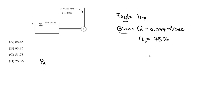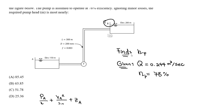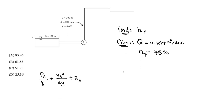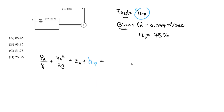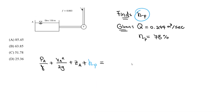On the left side we have pressure at A over gamma, plus velocity at A squared over 2g, plus elevation at A. Then we add the required pump head H_p — this always goes on the left side, representing the before condition. This equals the right side: pressure at B over gamma, plus velocity at B squared over 2g, plus elevation at B.